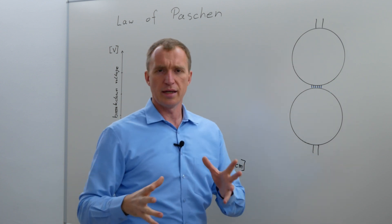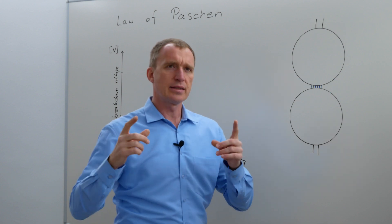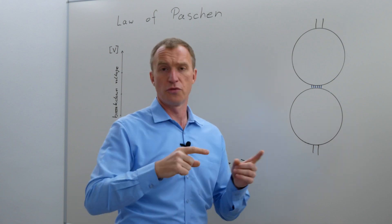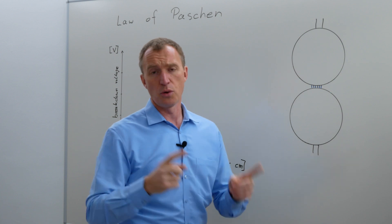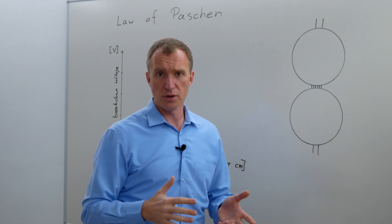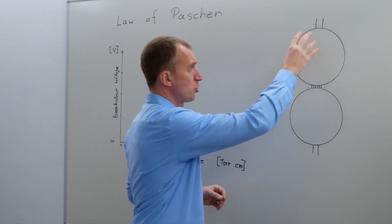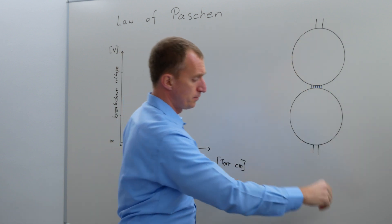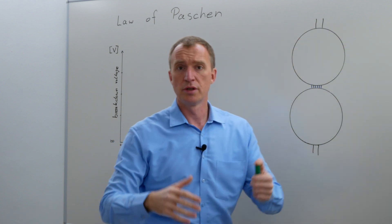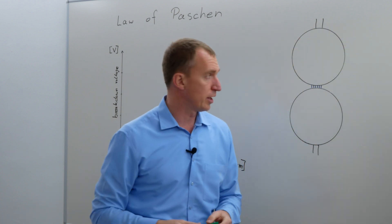We could talk hours about that. One important thing is that there is no photoionization inside, that the only source of electrons would be the electrodes, but we don't want to go too deep into that. So, we have two electrodes enclosed into a vessel where the pressure can be changed.